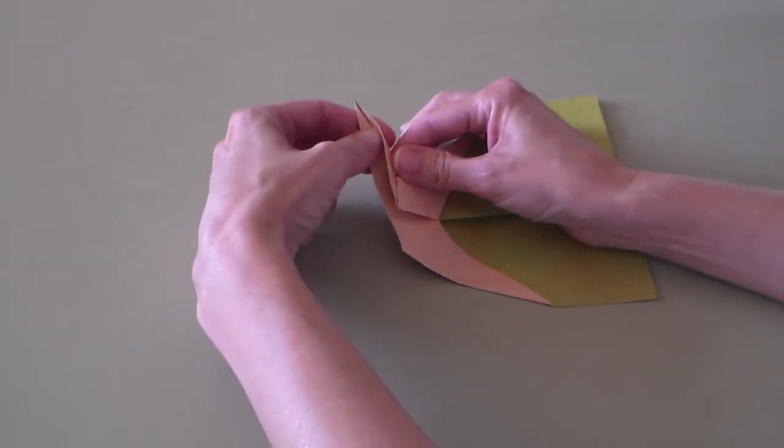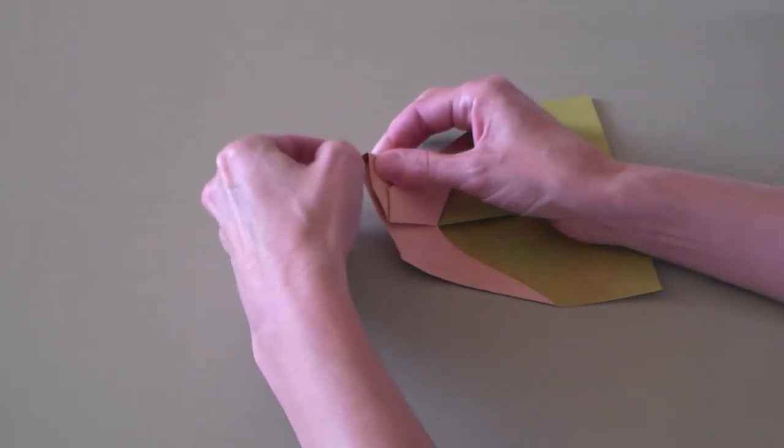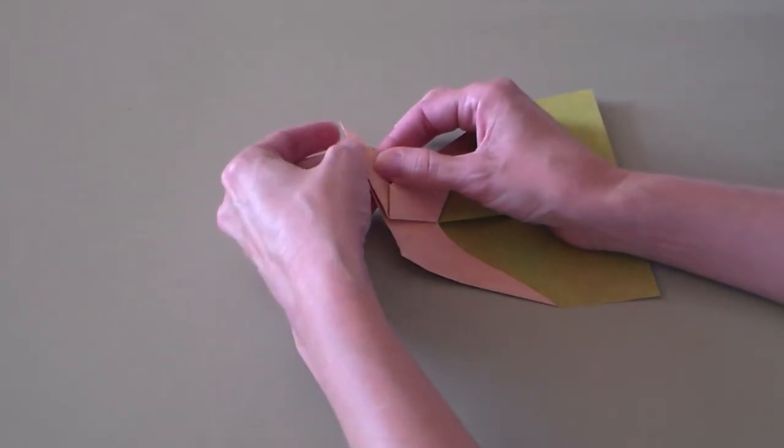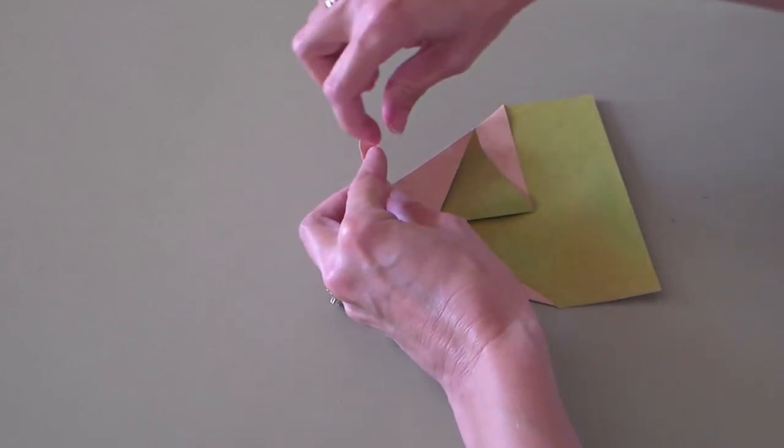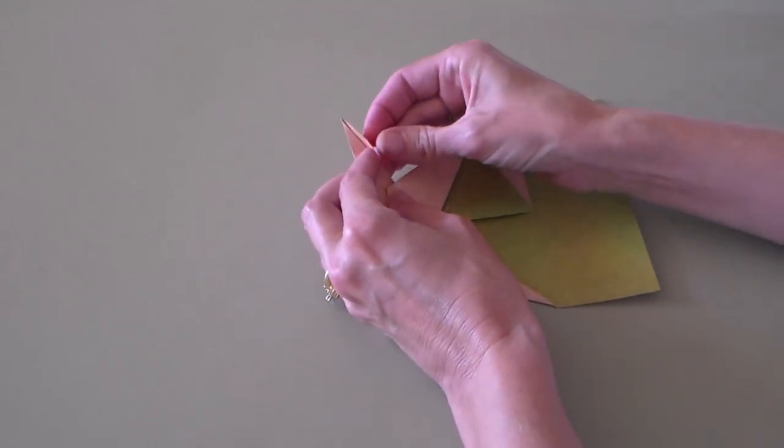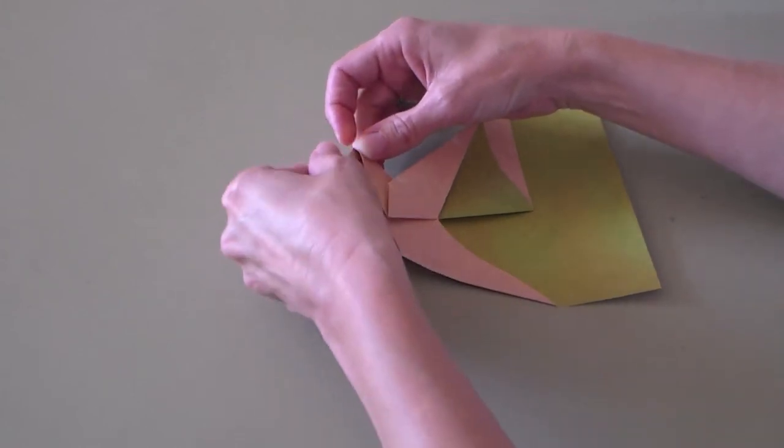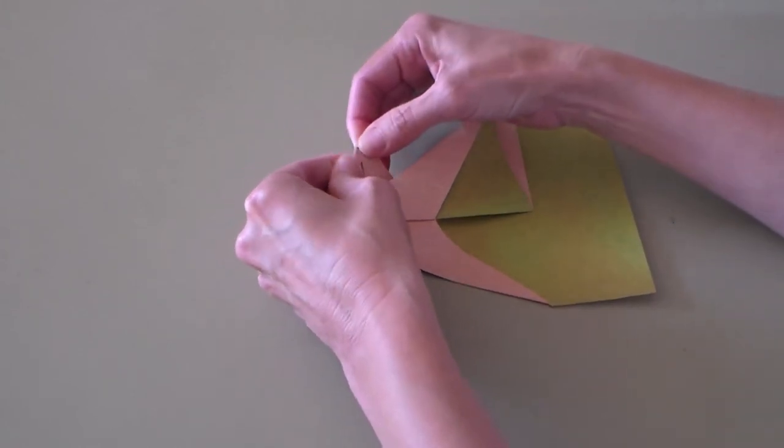And you're going to do an inside reverse fold to make that look. So you're going to open this up and reverse this middle fold that's folded as a mountain fold, and you're going to make it a valley fold like that. And then it will collapse.